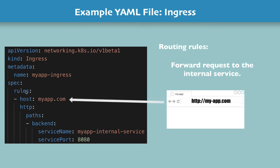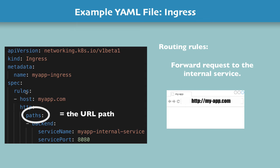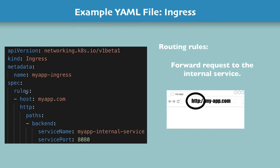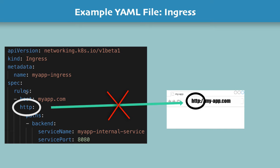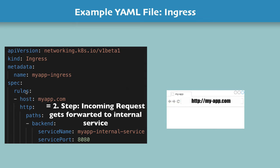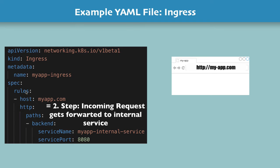So when a request to that host gets issued, you redirect it internally to a service. The path here means the URL path — everything after the domain name, so slash whatever path. You can define those rules here, and we'll see different examples of path configuration later. As you see in this configuration, we have the HTTP protocol. Later in this video, I'll show you how to configure an HTTPS connection using the ingress component. One thing to note is that this HTTP attribute does not correspond to the incoming protocol — it's the protocol that the incoming request gets forwarded to the internal service, which is the second step.